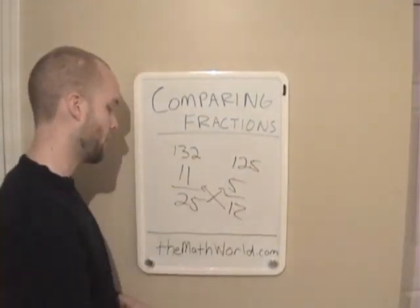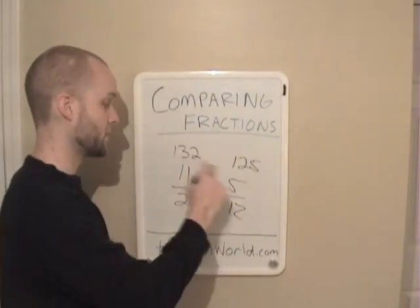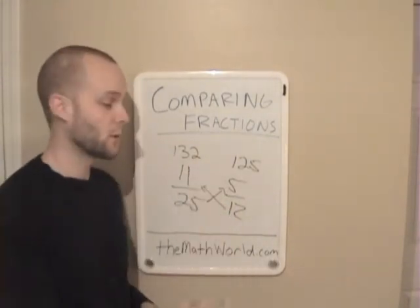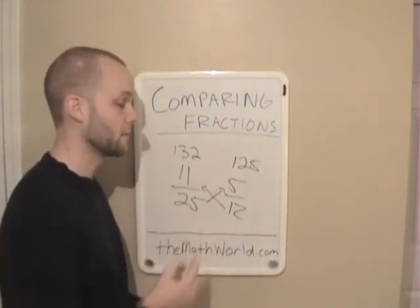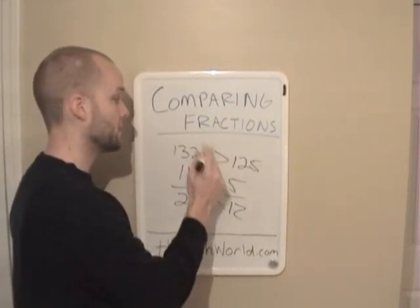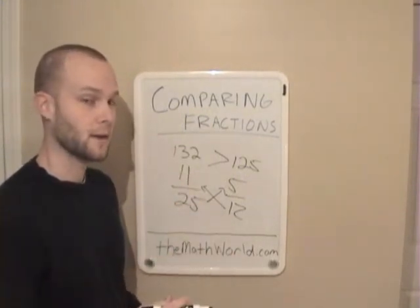So as you can see here right away, we would never be able to tell which one's greater. But with a little multiplication, we can see that since 132 is greater than 125, that 11-twenty-fifths is greater than 5-twelfths. So this is how you compare fractions, a very easy way to compare fractions when the denominators are not the same.